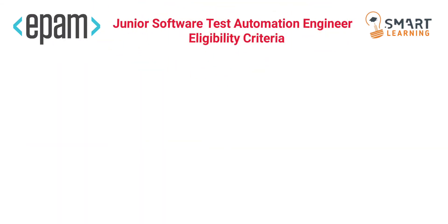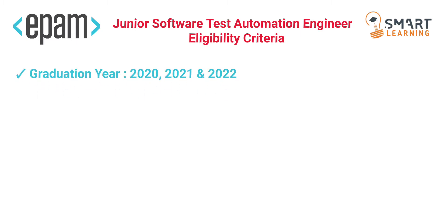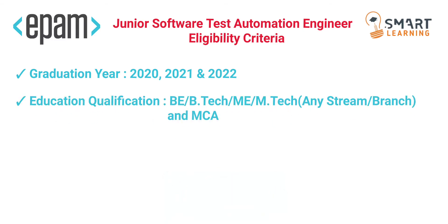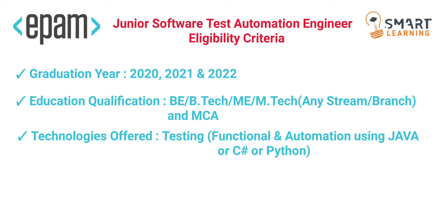Now coming to the Junior Software Test Automation Engineer role. The eligibility: graduation year must be 2020, 2021, or 2022. Education qualification can be BE or BTech, ME or MTech — any STEM branch is eligible. MCA is also eligible for this Test Automation Engineer role. Technologies offered include testing for both functional and automation using Java, C#, or Python. A minimum of 60% is necessary to apply for this role too.